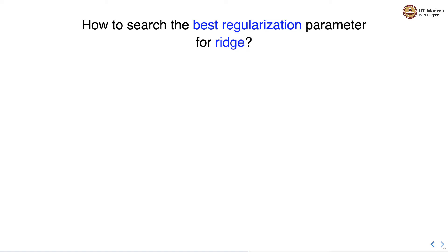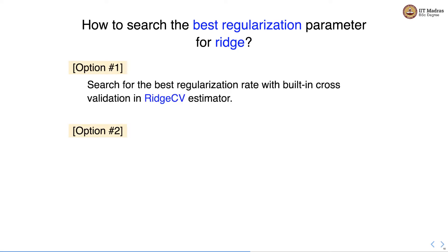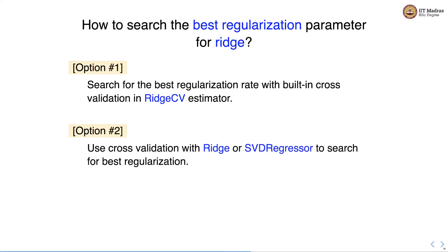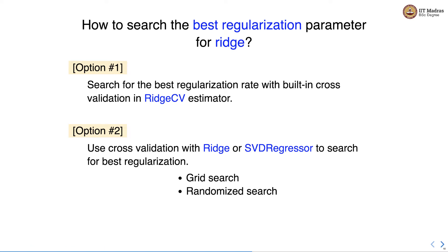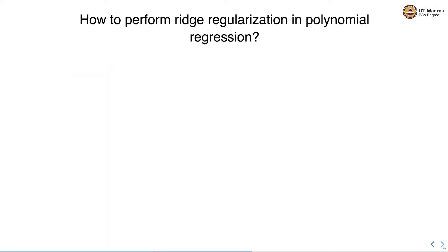In the first illustration we set alpha explicitly to a particular regularization rate, but ideally we would like to find the alpha value automatically. To search for the best regularization parameter, there are two options: we can use the RidgeCV estimator that performs built-in cross-validation to find the best regularization rate, or we can use the SGDRegressor estimator with hyperparameter tuning using grid search or randomized search.